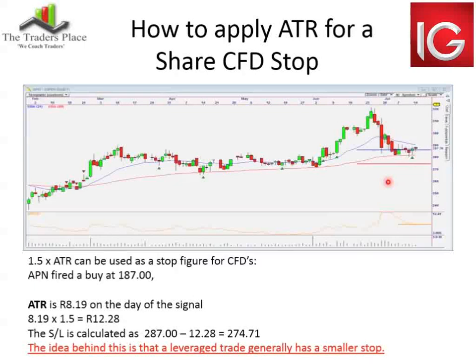When it comes to share CFDs, I use one and a half times average true range. The reason is simply risk — you've leveraged yourself. The money down is worth a lot more in the market than what your margin is. It changes the percentages and the structure of the trades. On the same trade, one and a half times ATR applied to the same entry price gives me an ATR of 8.19 multiplied by 1.5, giving a stop loss of minus 12.28.